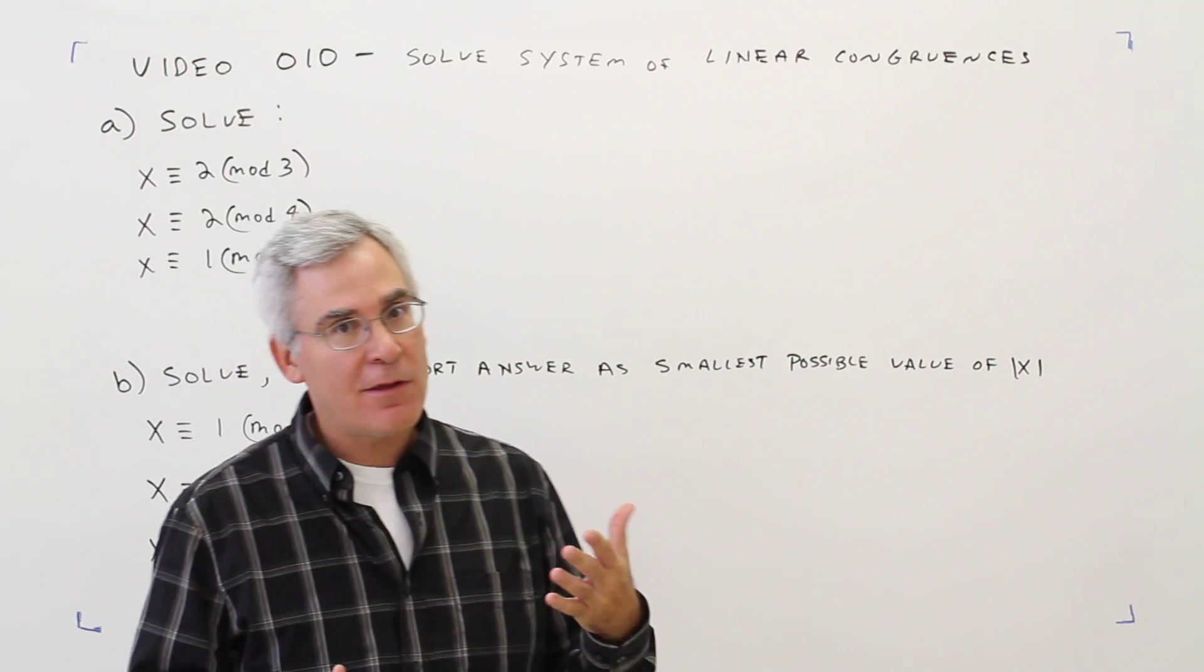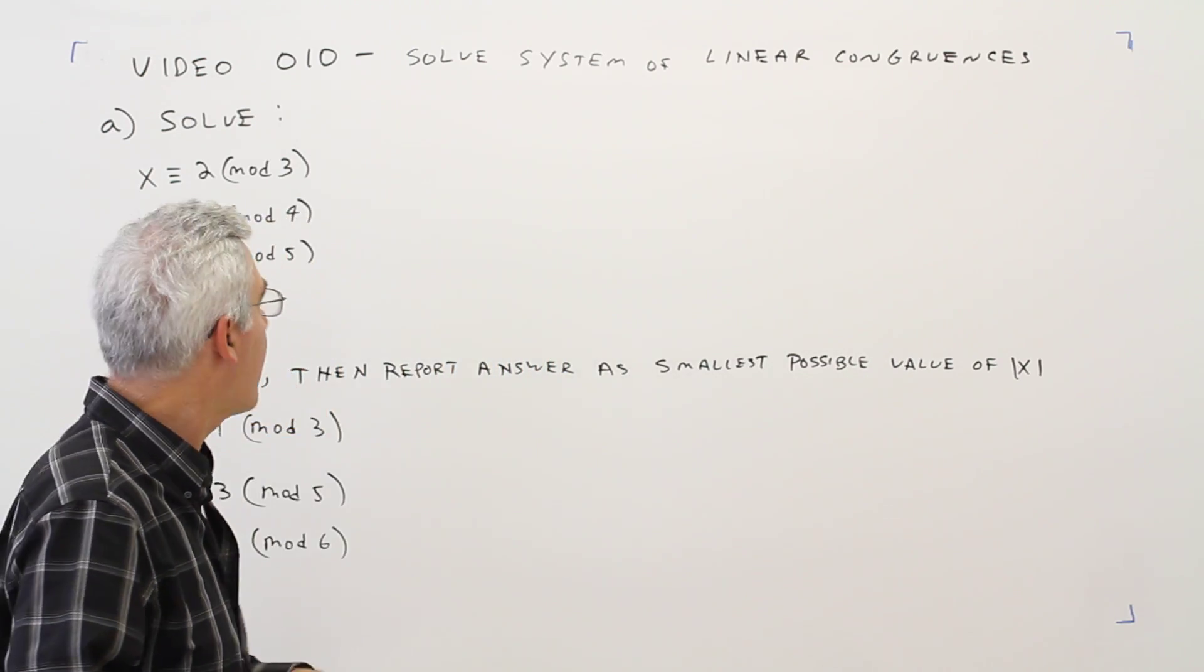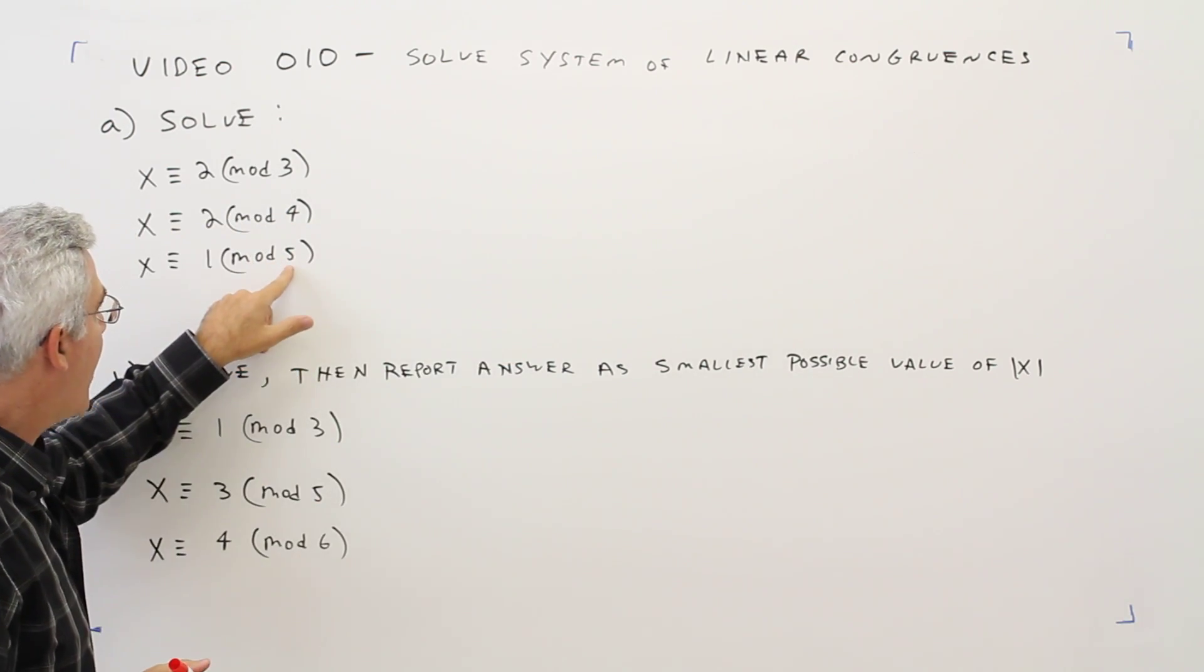There are algorithms for doing this. They're kind of messy and complicated. I'm just going to show you guess and check. So I'm going to make a list and see what's in common. I'll start with a larger mod, mod 5.